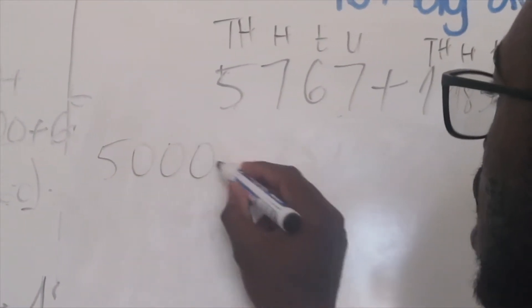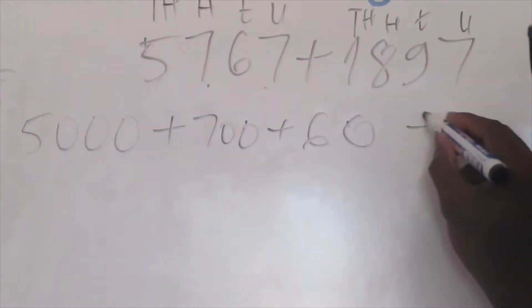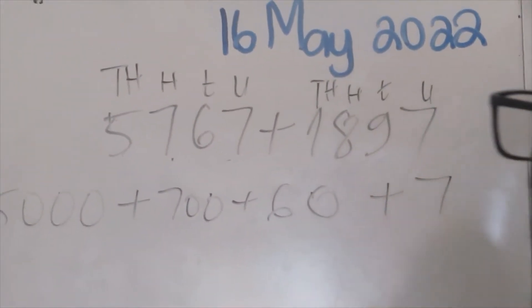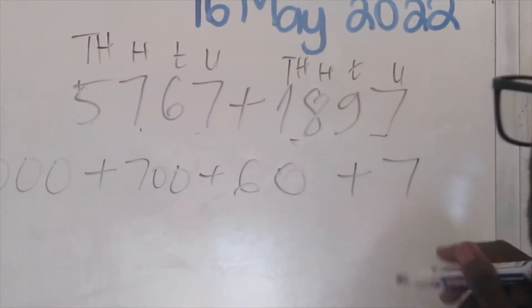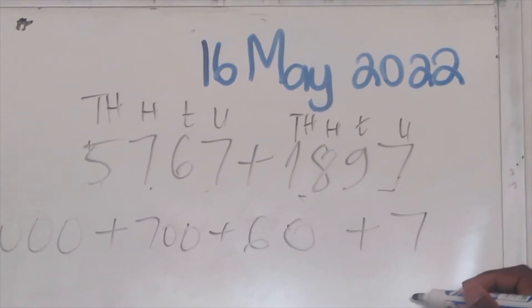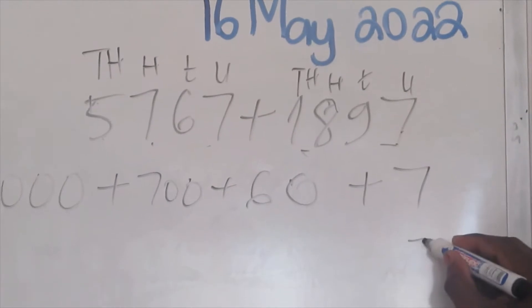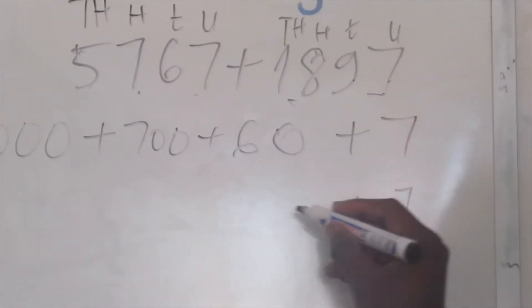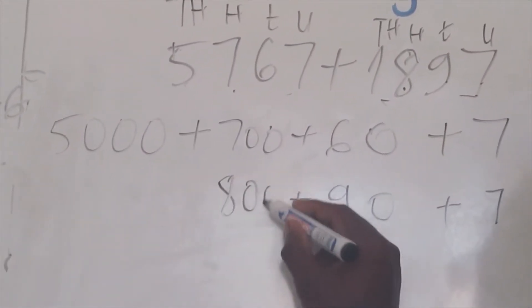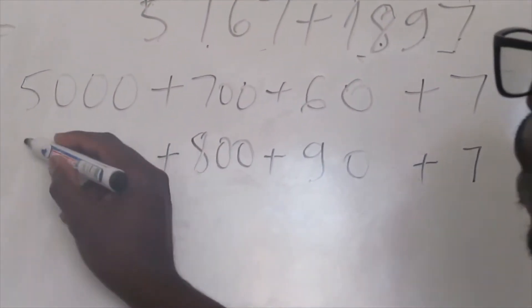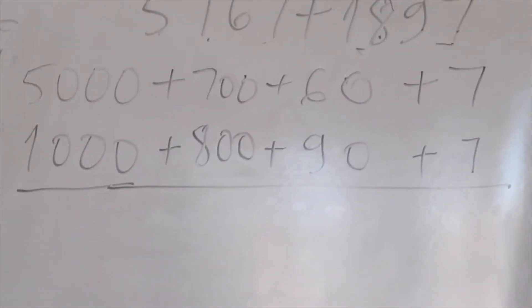So we start with this number to break it. How many thousands? We have 5,000 plus 700 plus 60 plus 7. Now we're going to break this one here, but it will be down on this line. Now to break this one, it's better to start from your right going to the left. You start with your units so you don't make a mistake: 7, then 90, then 800, then 1,000.